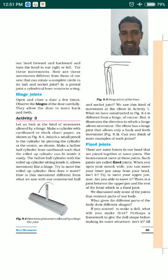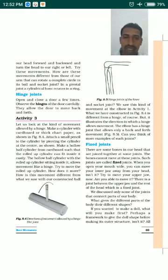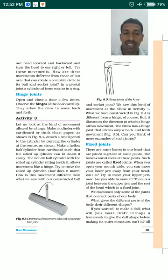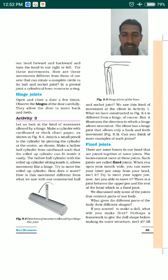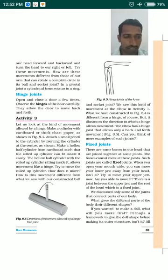The elbow has a hinge joint. In both our hands, the elbow allows only back and forth movement — that is why it is an example of a hinge joint. Similarly, the knee joint is also an example of a hinge joint. Both knee joints and elbow joints are examples of hinge joints.